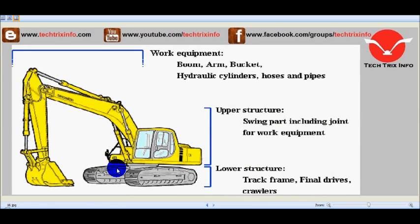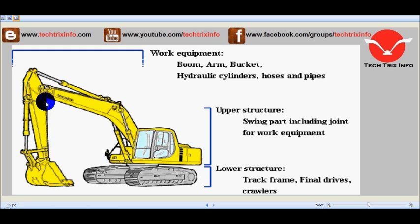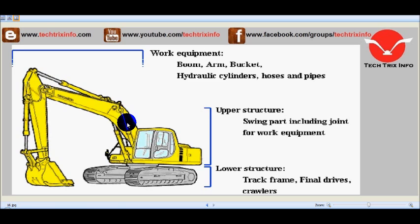The work equipment of an excavator consists of the boom, the arm or dipper, and hydraulic cylinders. One hydraulic cylinder is used to operate the bucket, another to operate the dipper, and two hydraulic cylinders are used for the operation of the boom.